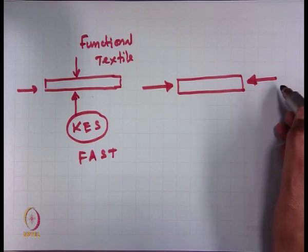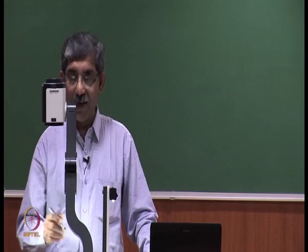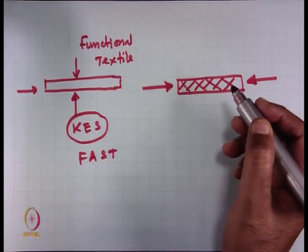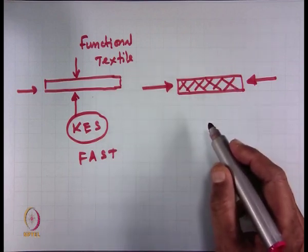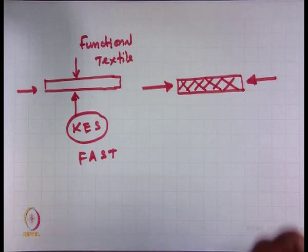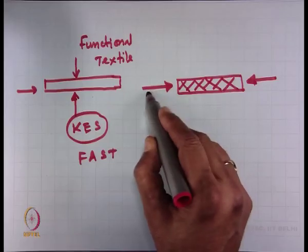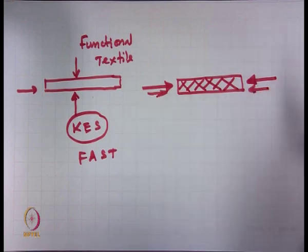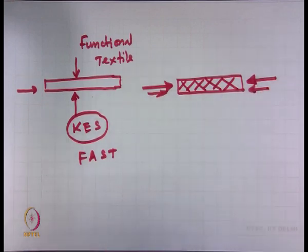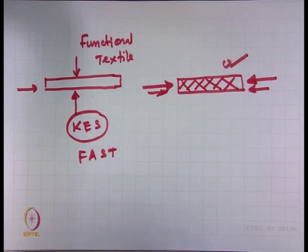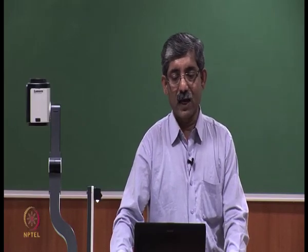It is a hard material, and that is why the compression testing is carried out along the plane. Force is applied parallel to the plane of the composite material. In fibre reinforced composite, the compressional load is applied along the plane direction when these materials are used for structural fabrication. So this compression is along the plane.